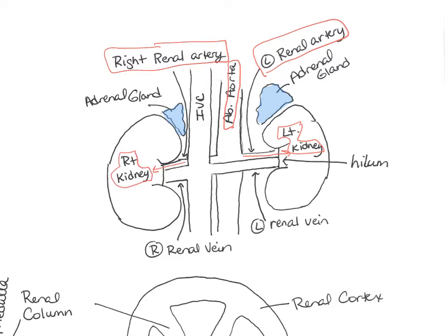When blood exits the kidneys, it goes through the renal veins — the right renal vein out of the right kidney and the left renal vein out of the left kidney. The hilum is the point of entry for the renal artery and renal nerves, and the point of exit for the renal vein and the ureter. The ureter is a long tube that delivers urine down to the urinary bladder.